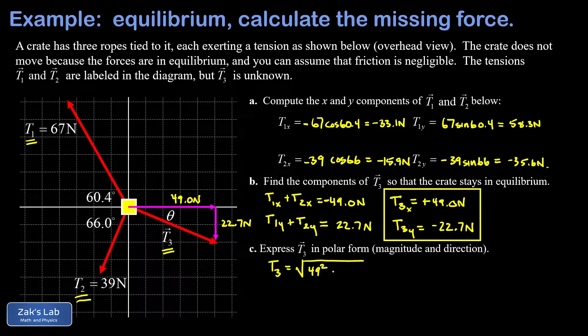So t3 is the square root of 49 squared plus 22.7 squared. When I run the numbers on this to three significant digits, I get 54.0 newtons for the tension t3.